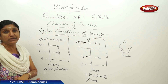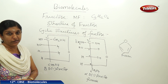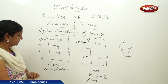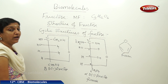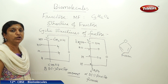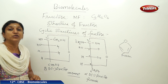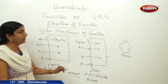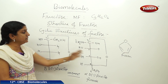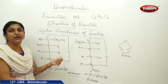Fructose has a furanose ring system and glucose has a pyranose ring system. Pyranose is related to the organic compound pyran, whereas furanose is related to the organic compound furan. The beta and alpha forms of fructose are the anomers — they differ in the configuration of only one carbon, which is C2 in the case of fructose and C1 in the case of glucose. Now let us write what are called the Haworth structures. Like we wrote for glucose, we can represent these structures in the form of Haworth structures, which better describe the various groups and their orientations.